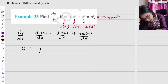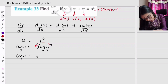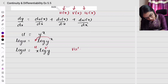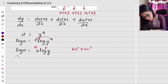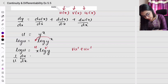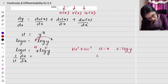First, u = y^x. Taking log on both sides: log u = log(y^x), bringing the power down gives log u = x · log y. We now have two functions — u = x and v = log y — so we apply v·u' + u·v'. Differentiating both sides: (1/u)(du/dx) = x · log y. Here u' = 1, and v' = (1/y)(dy/dx).